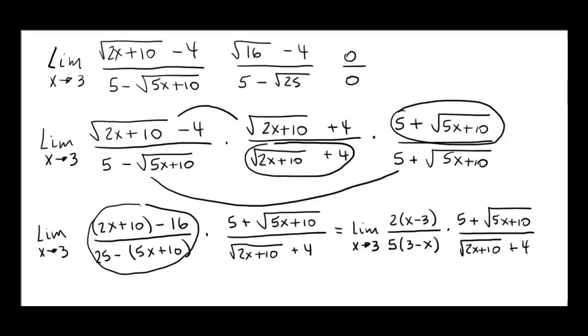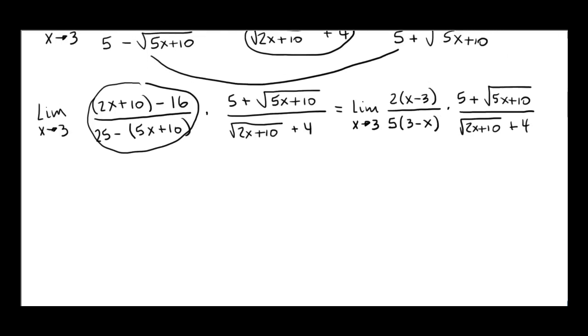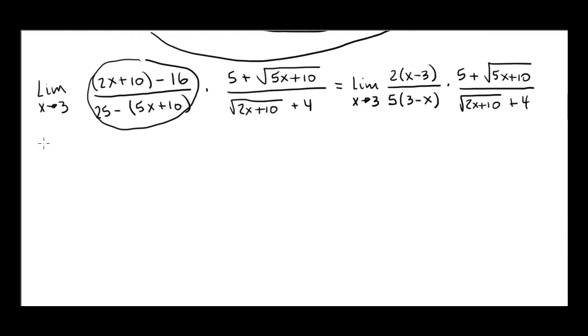Now the next step is to realize that x minus 3 divided by 3 minus x is the same as x minus 3 divided by minus x minus 3. We can just send this minus in the denominator and see that we get 3 minus x. These cancel leaving us with minus 1.